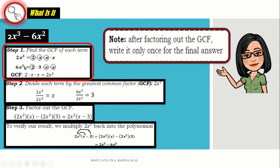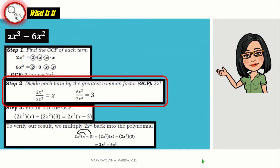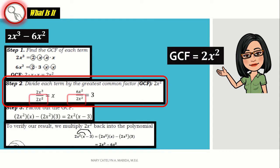The GCF will be the common between the two which are 2, x and x. Multiplying them, we have 2x squared. Step number 2. Divide each term by the greatest common factor which is 2x squared. So, 2x cubed divided by 2x squared is x and 6x squared divided by 2x squared is 3.